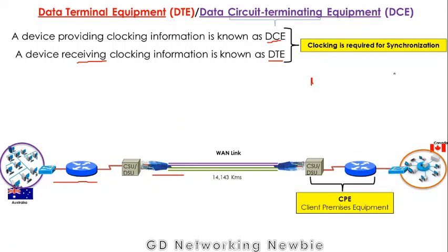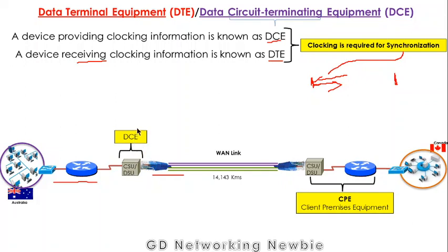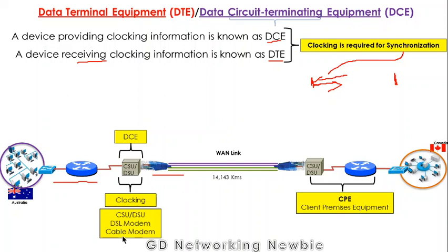Synchronization is needed to determine when two devices should start transmitting and when they should start receiving — all of this is dictated by synchronization. The device that provides clocking is DCE, and the device that receives clocking is DTE. In this case, the CSU/DSU is working as DCE, meaning it provides clocking information. DSL modems and cable modems also provide clocking information. The router, on the other hand, is the DTE, which receives clocking information.